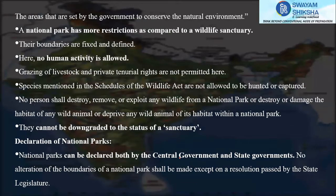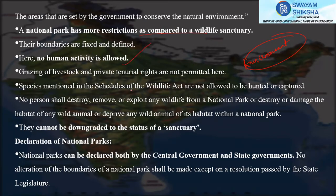The main objective of a national park is to protect the natural environment area and biodiversity conservation. There is an area designated as a national park, and the national park has more restrictions as compared to the wildlife sanctuary. No human activity is allowed inside a national park.